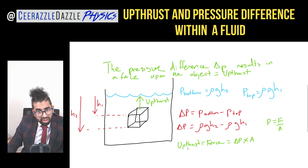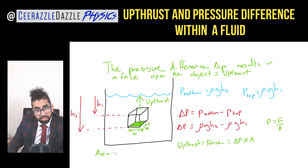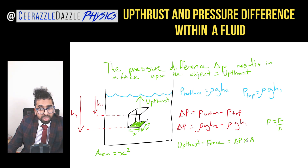Lots of students don't understand what the area is here. It's the area of the face of the cube. If I label the side as x and the other side as x, the area is going to be equal to x squared — x times by x making x squared.